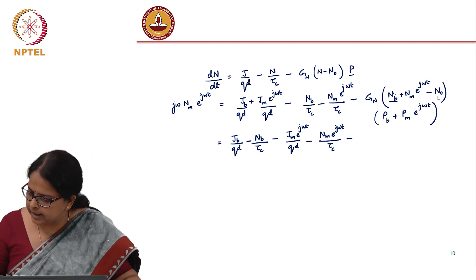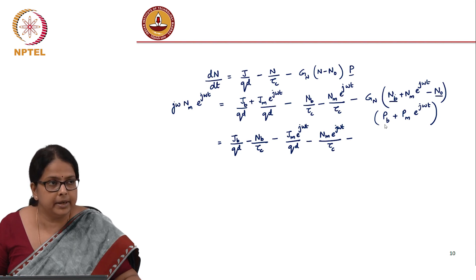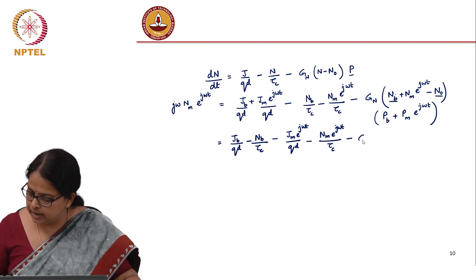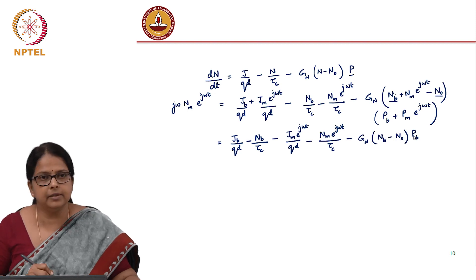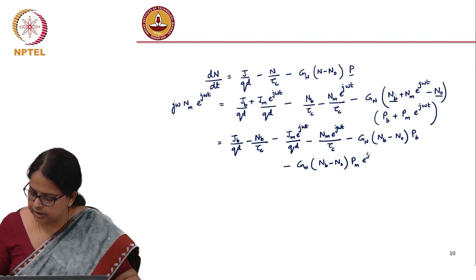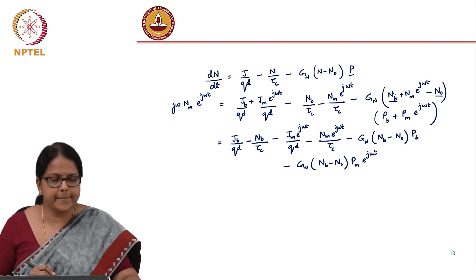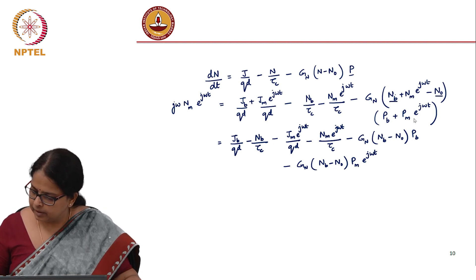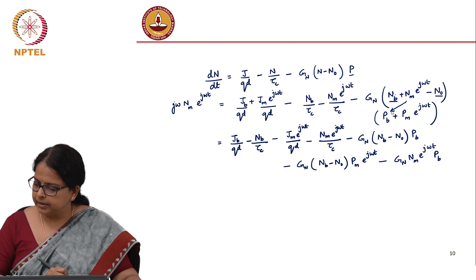Here again we will accumulate n_b minus n_0 and p_b DC and AC separately. This will be g_n times (n_b - n_0) times p_b as the first term, minus g_n times (n_b - n_0) times p_m*e^(j*omega*t), the third term.